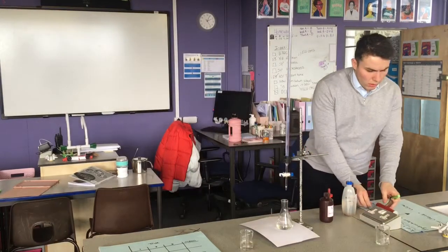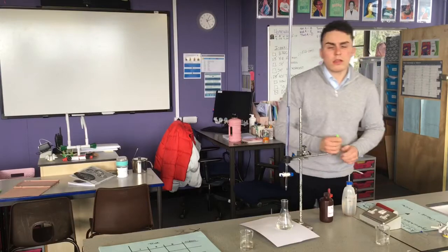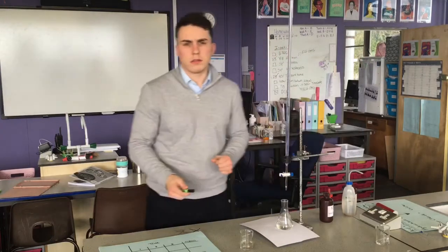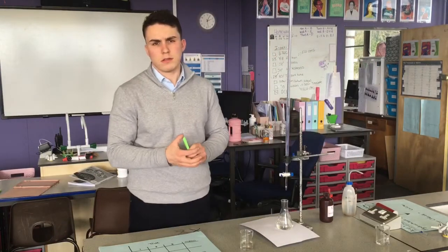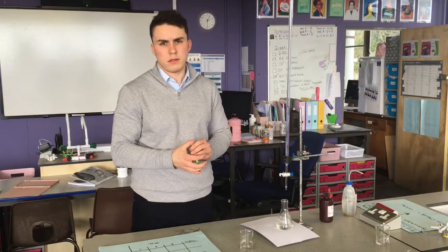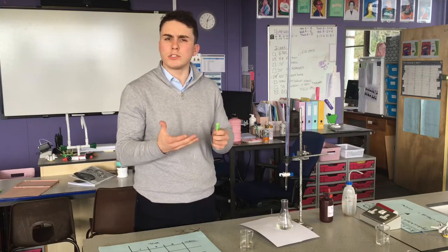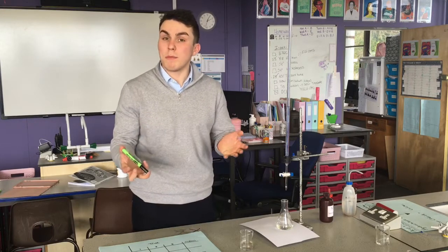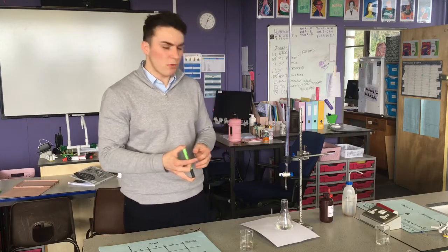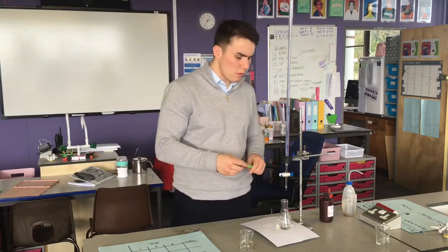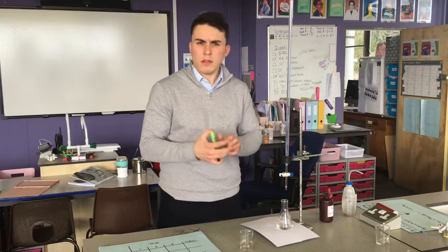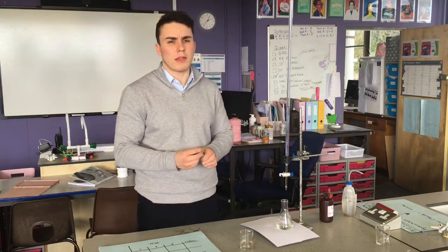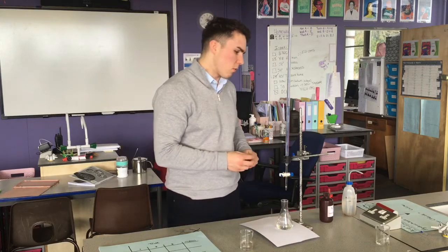The biggest way we could improve this experiment is the colour change — knowing exactly when it happens. Maybe we would use a colorimeter; I think we've used them before in rates practicals. That's a way of improving on that human error once more.